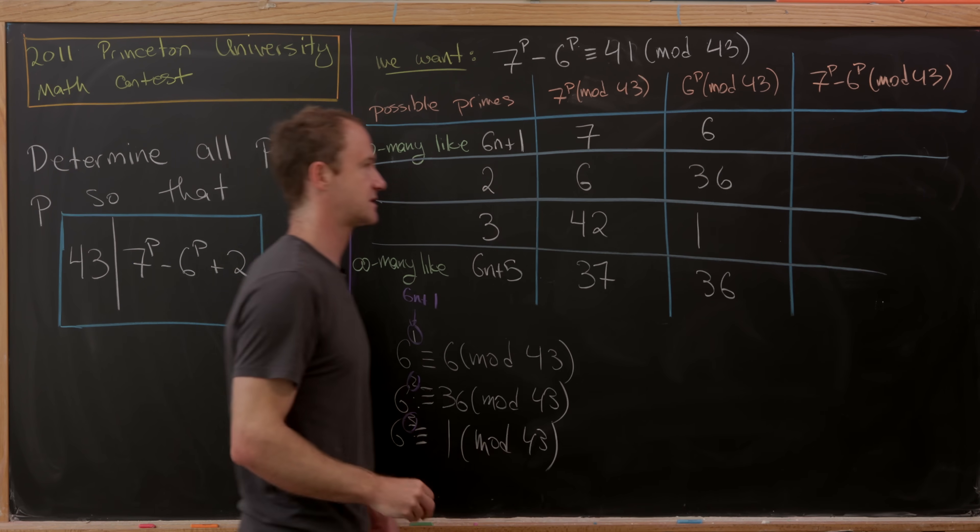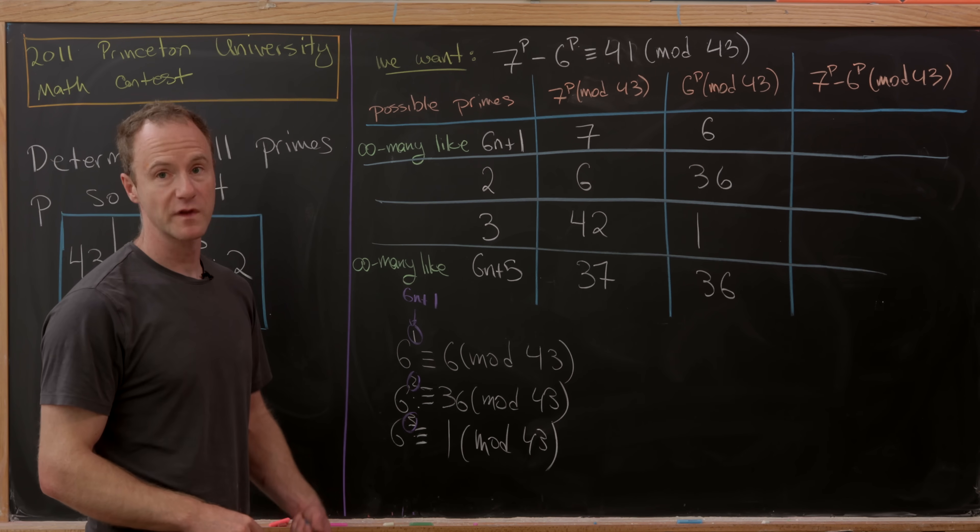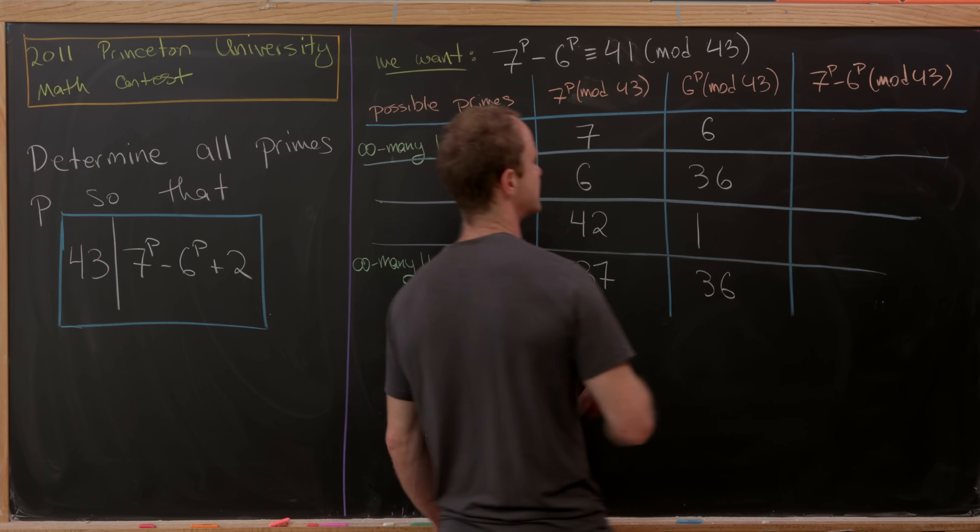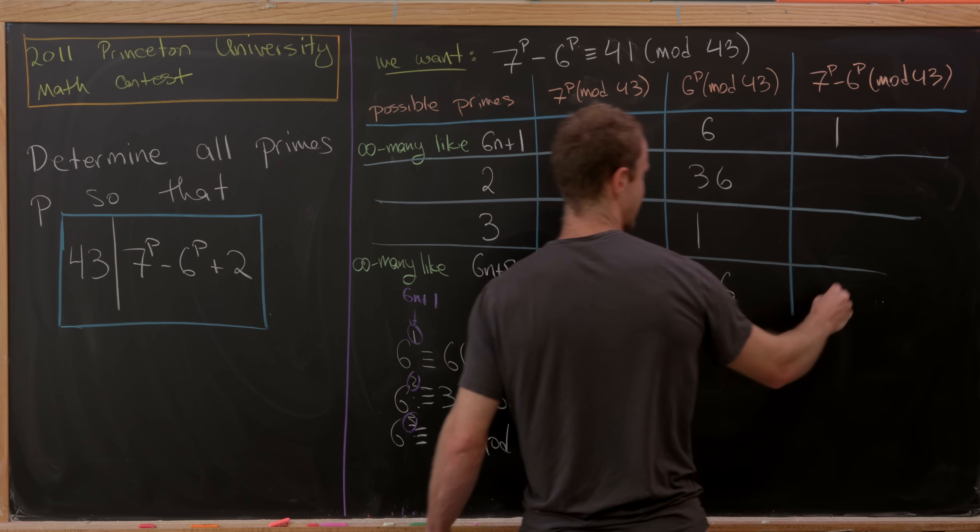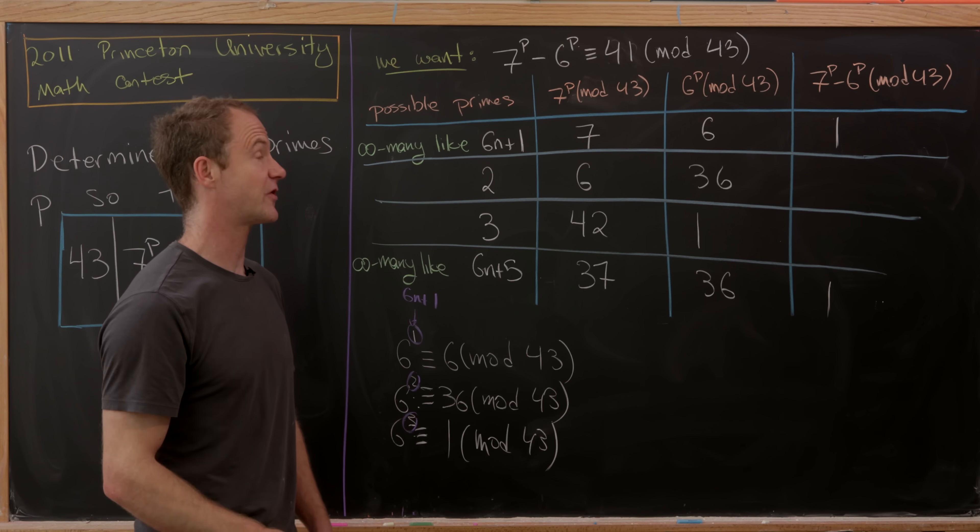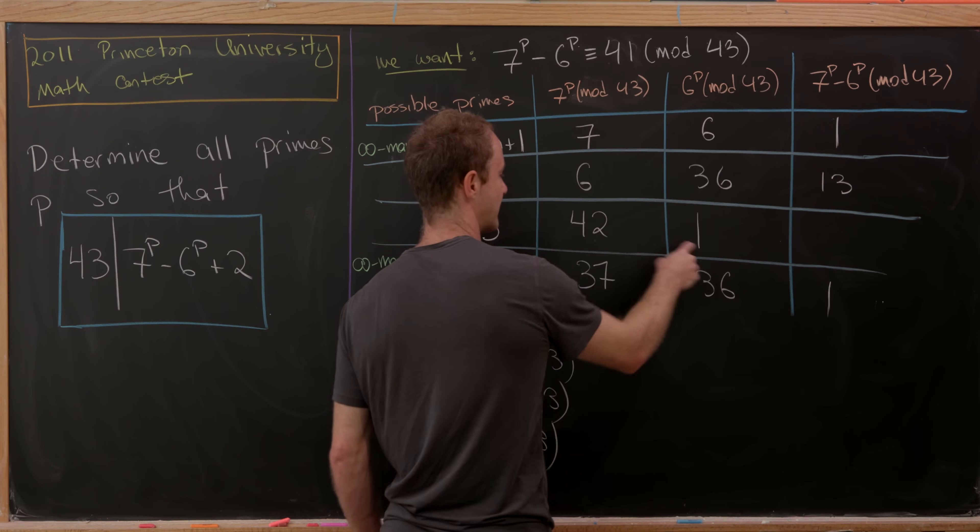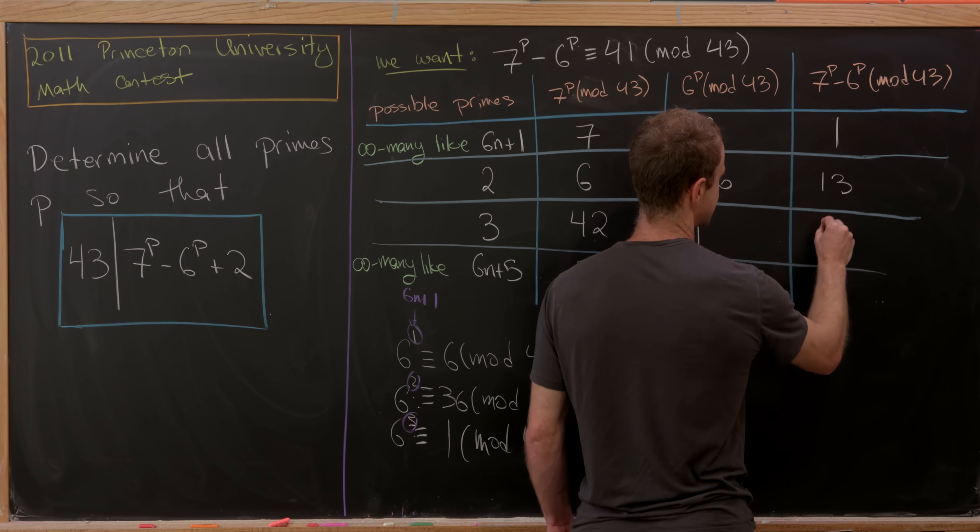Now let's take their difference and see when we get 41. We're only going to get that one of the times. So 7-6 is 1, 37-36 is 1, 6-36 is -30, which is the same thing as 13. And finally, 42-1 is 41.